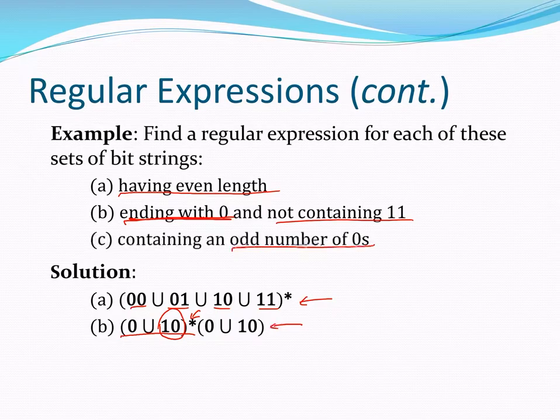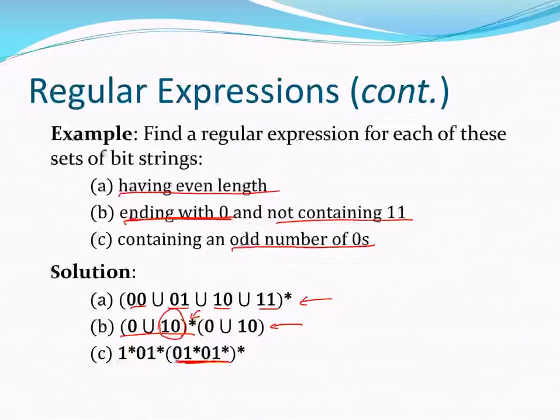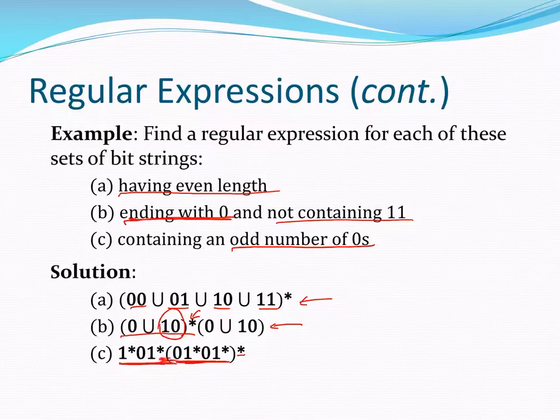Finally, strings containing an odd number of zeros: you can get an even number of zeros by using (0 1* 0 1*)* — zeros with any number of ones between them — giving all bit strings with an even number of zeros. Then adding a surrounding 1* zero 1* ensures we have exactly one more zero, giving an odd total. That is, even number of zeros plus one equals an odd number of zeros.